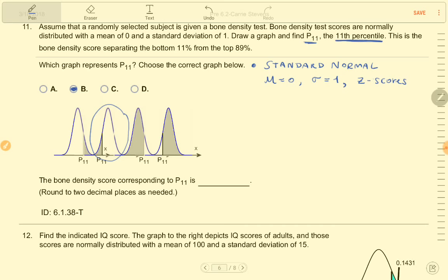So just to make this a little easier to see, there is some Z-score, which is our P11, that has an area to its left, and that area is equal to 0.11.